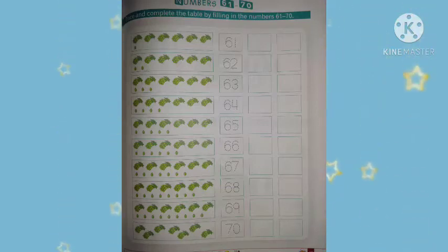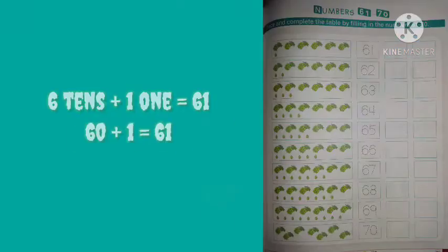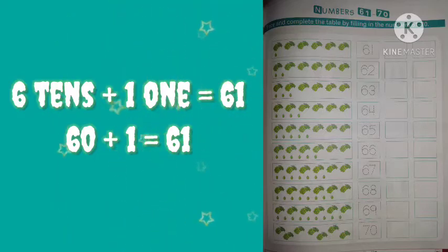Now, see here — 1, 2, 3, 4, 5, 6 — 6 bunches of 10 graphs. That means 6 tens and 1 single graph, that means 1 one. 6 tens and 1 one is equal to 61.